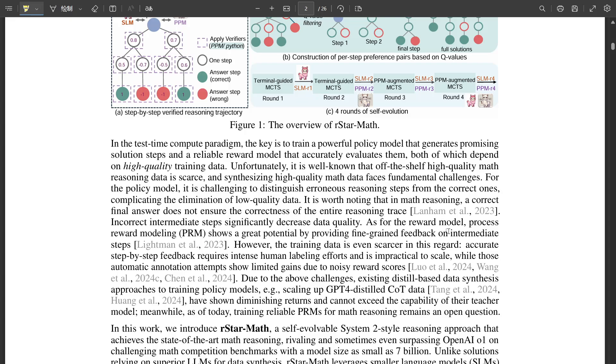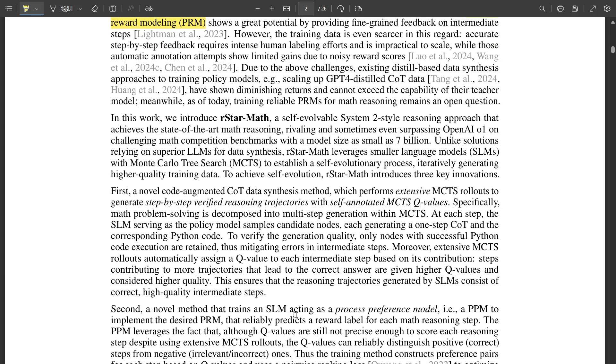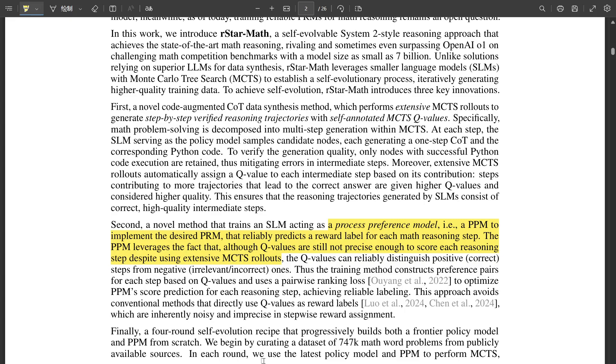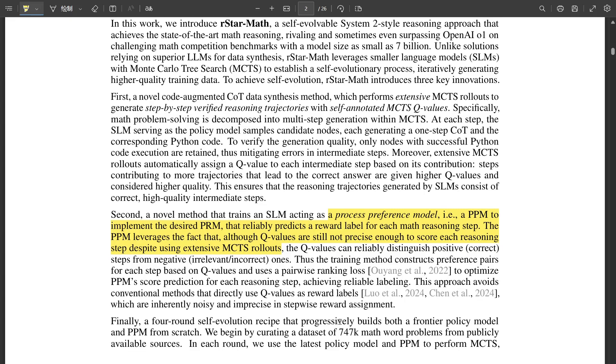So let's delve into this PPM a bit further. How does it actually go about scoring those steps? The PPM leverages something called Q-values, which are essentially scores that the AI assigns to each possible move during that MCTS process. And it uses these Q-values to create preference pairs for each step. Essentially saying this step with a high Q-value seems promising, while this one with a low Q-value might be leading us astray. So the AI is not just blindly following instructions. It's learning to recognize patterns of success and failure, gradually developing its own sense of what makes a good solution path.